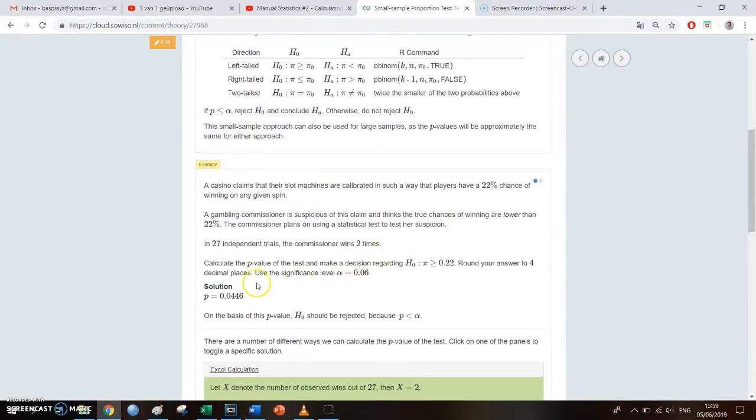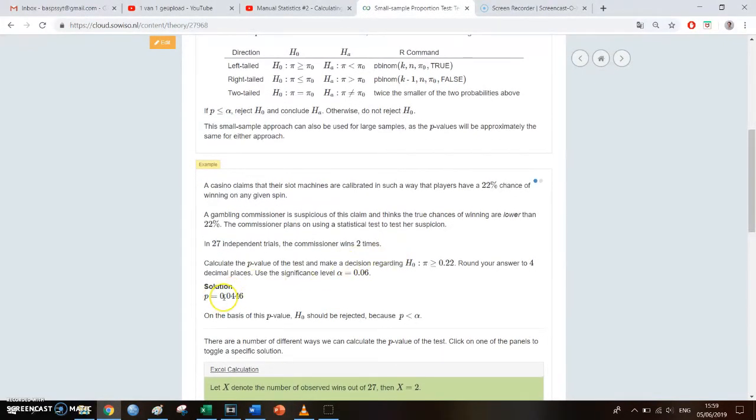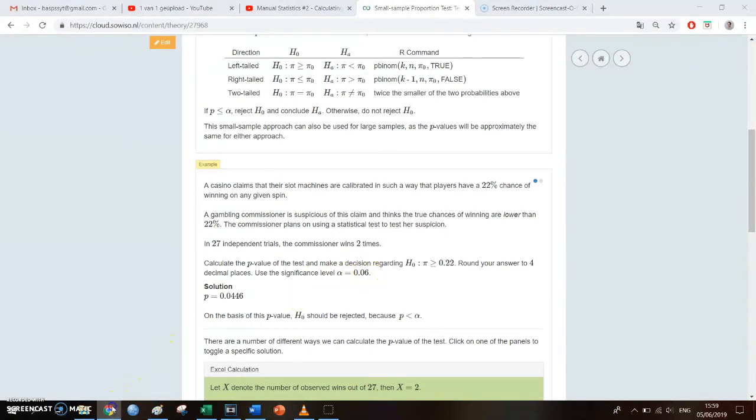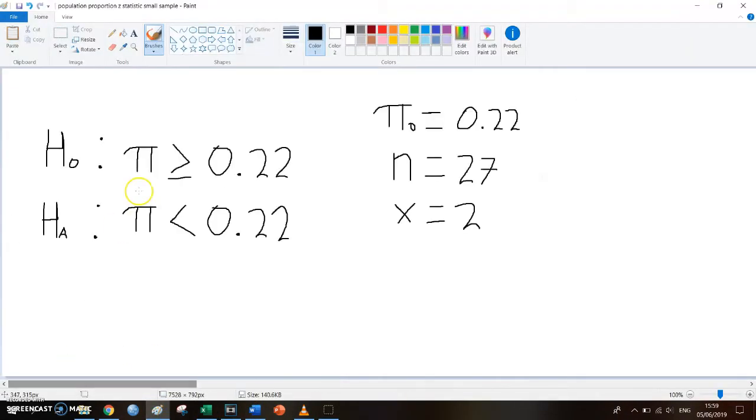Well, if we then go back to the question, we saw, yeah, indeed the solution is 0.0446. We see that this is lower than the significance level of 0.06, so of the alpha. So that means that you can reject the null hypothesis. Because the p-value is lower than 0.06, that means that you can reject the null hypothesis and thereby accept the alternative hypothesis. So this commissioner has now statistically proven that the chance of winning at this casino is lower than 0.22, so lower than 22 percent.